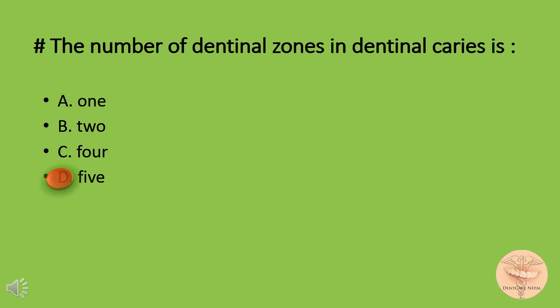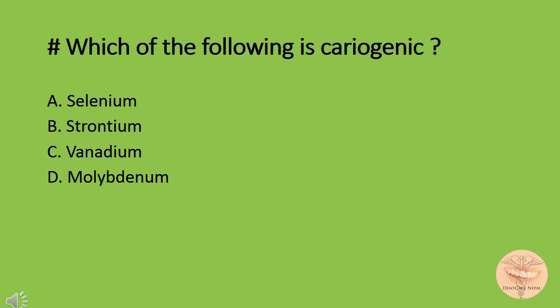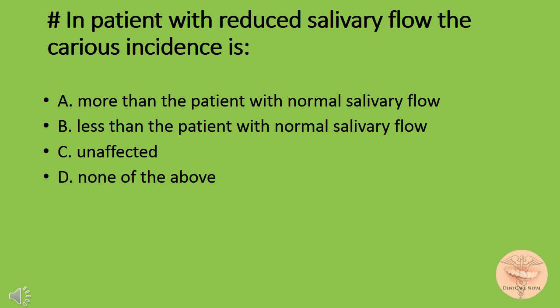Which of the following is cariogenic? Option A) selenium, option B) strontium, option C) vanadium, or option D) molybdenum. The correct answer is option A: selenium. In patients with reduced salivary flow, the caries incidence is: option A) more than a patient with normal salivary flow, B) less than the patient with normal salivary flow, C) unaffected, or D) none of the above. The correct answer is option A: more than the patient with normal salivary flow.